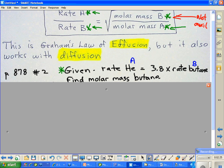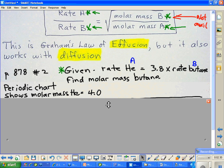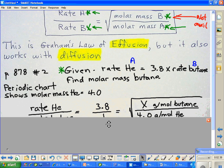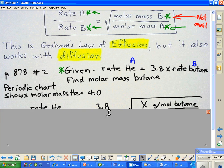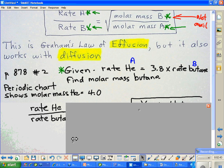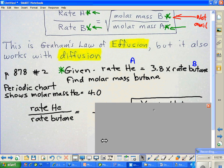Using the periodic chart to show the molar mass of helium at four, we can look at the way this problem gets set up. We're starting out with the rate of helium over the rate of butane. When we do that, helium is 3.8 times faster than butane.